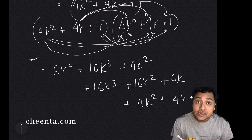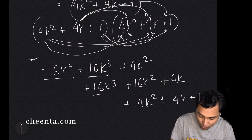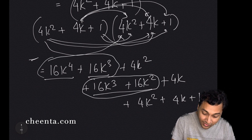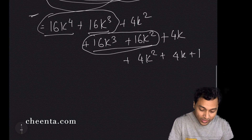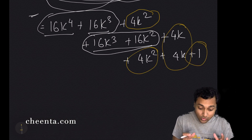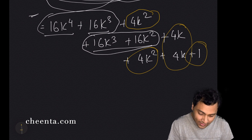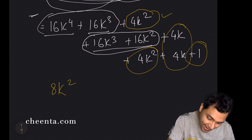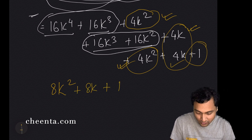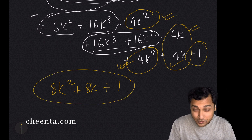I want to show this entire expression gives remainder 1 when divided by 16. Some terms are already divisible by 16: specifically 16k^4, both 16k^3 terms, and 16k^2 — I don't need to worry about those. What remains is 4k^2 + 4k^2 + 4k + 4k + 1, which simplifies to 8k^2 + 8k + 1. I need to show this gives remainder 1 when divided by 16.